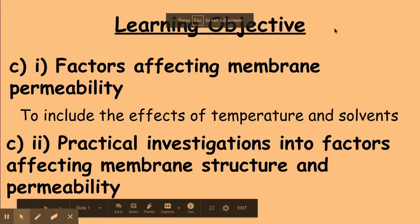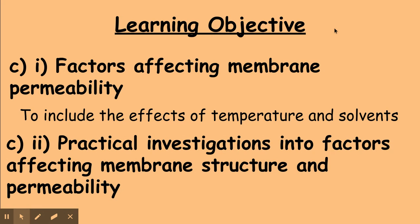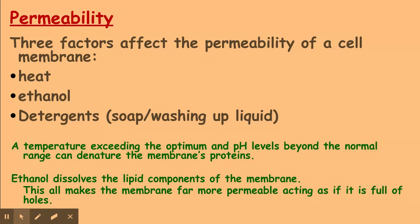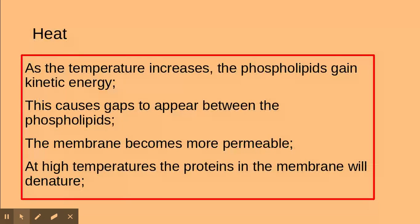Welcome, biologists. Today we are looking at the theory behind membrane experiments to do with specification point C on biological membranes, taken from the OCR specification 2.1.5. We are going to be looking at the theory behind how temperature, solvents, and detergents impact on membrane permeability. The three main things that impact on the permeability of the cell membrane are heat, ethanol or alcohol concentrations, and detergents such as soap or washing up liquid. We're going to concentrate first on heat.